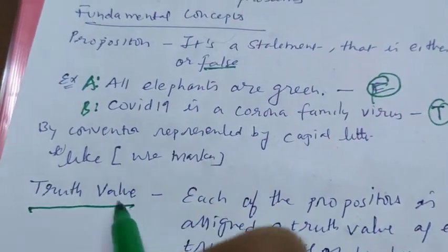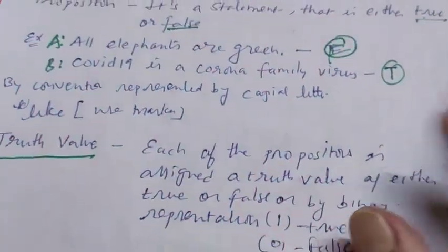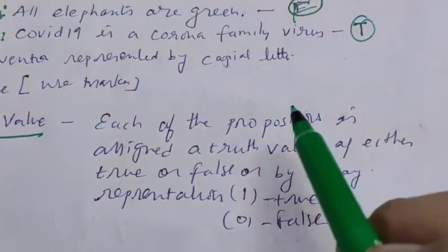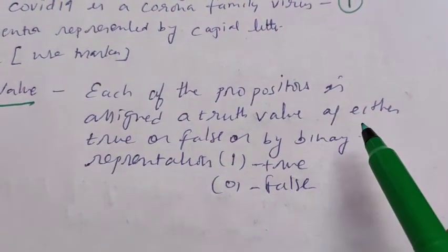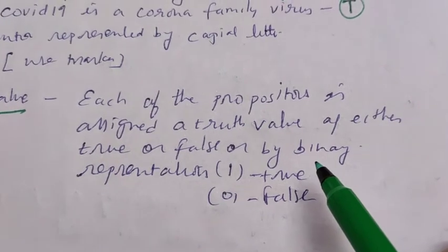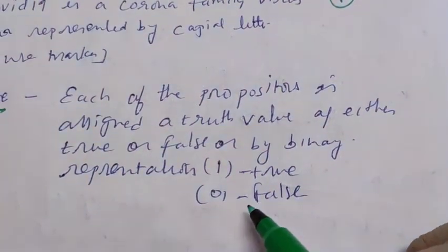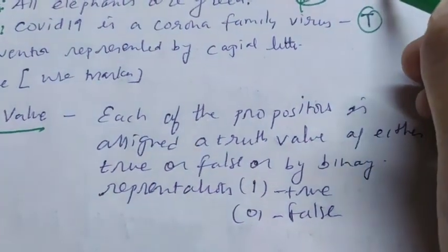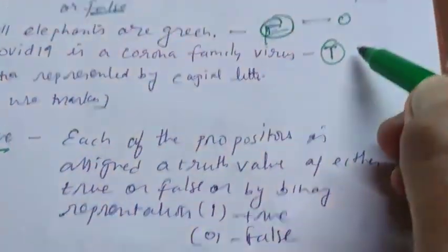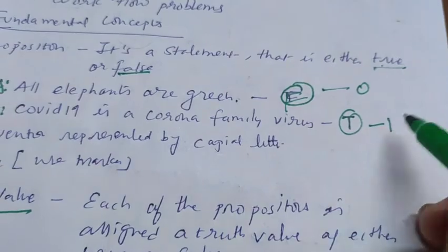Now comes the next thing that is truth value. Each of the propositions is assigned a truth value of either true or false or by giving the binary representation one for true or zero for false. For false it is zero and for true it is one.